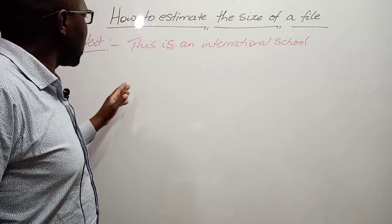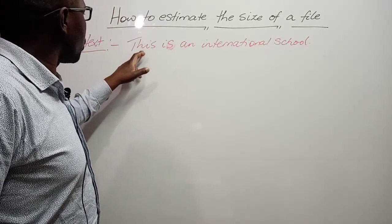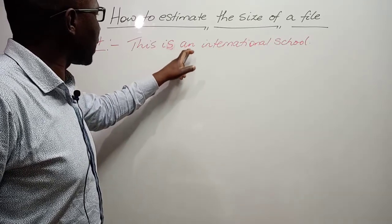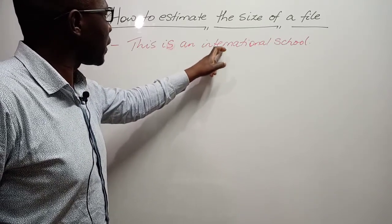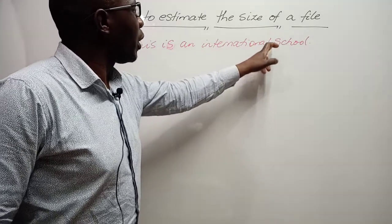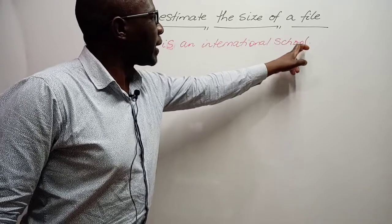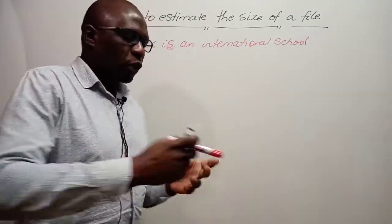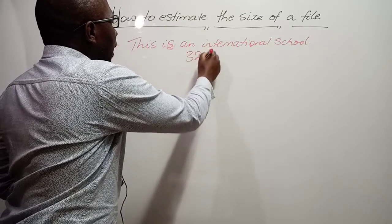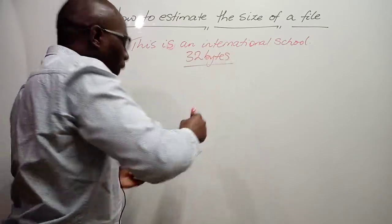Now let's count how many bytes we have in this text. Counting each character one by one, we get 32. So the size of this text is 32 bytes — that's the file size.